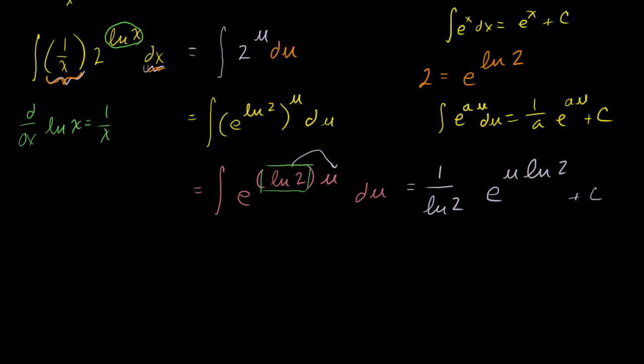But before I do that, let's see if I can simplify this a little bit. If I have, just from our natural log properties, log of a times the natural log of b, we know this is the same thing as the natural log of b to the a. Right, that this becomes the exponent on whatever we're taking the natural log of. So u times the natural log of 2 is the same thing as the natural log of 2 to the u.